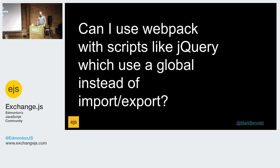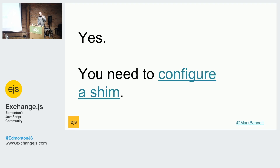There are some projects that don't really use NPM, and using those with Webpack is something a lot of people struggle with. It's certainly possible — what you have to do is use something called a shim. In your Webpack config, you tell it that jQuery for example is going to be available globally as a certain variable, and then Webpack understands enough to make sure that will be included where it needs to be.